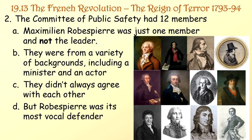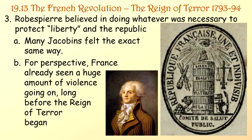The Committee of Public Safety had 12 members. Maximilien Robespierre was just one member, and not the leader. They were from a variety of backgrounds, including a minister and an actor, and they didn't always agree with each other. But Robespierre was its most vocal defender. Robespierre believed in doing whatever was necessary to protect liberty and the Republic, and many Jacobins felt the exact same way. For perspective, France had already seen a huge amount of violence long before the Reign of Terror began.